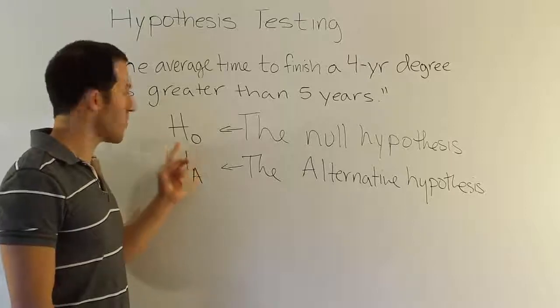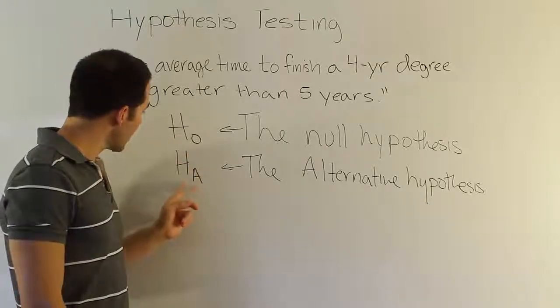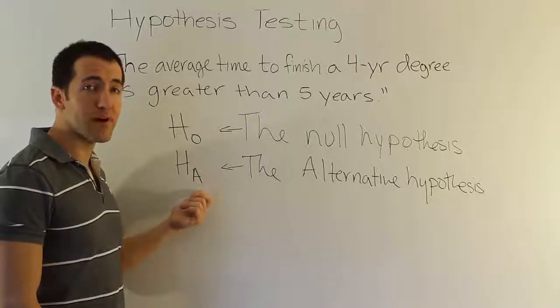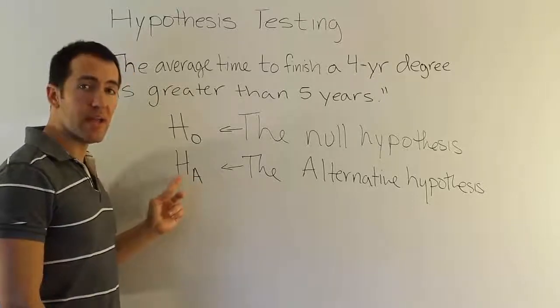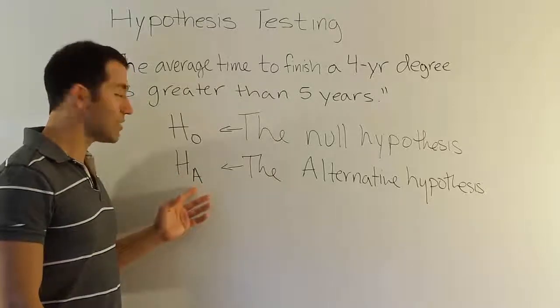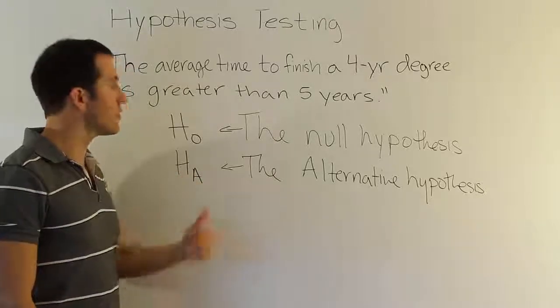The alternative hypothesis notation is H sub A, the A here for alternative hypothesis. You sometimes see H sub 1, but I like H sub A because A is very explicit, alternative hypothesis.